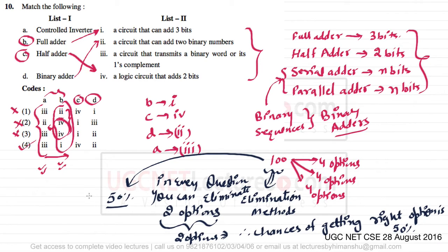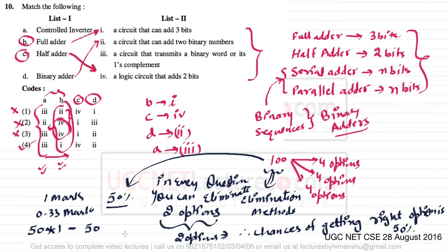Using statistics: out of 100 questions, if you answer every single question by eliminating two options, at least 50 questions will be correct. Assuming one mark for each correct answer and 0.33 marks deducted for each wrong answer, answering 50 correctly gives you 50 marks.